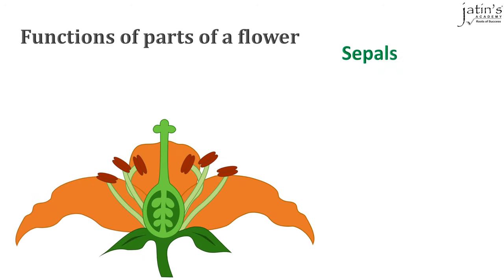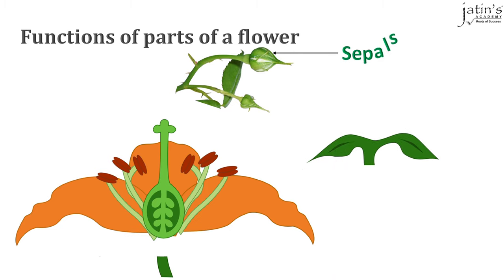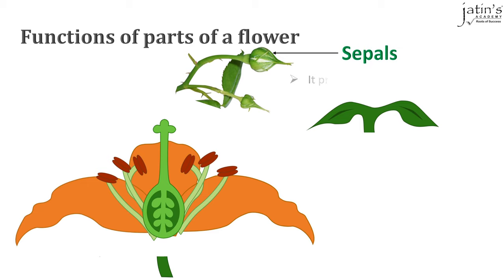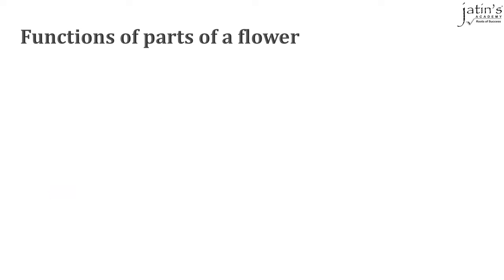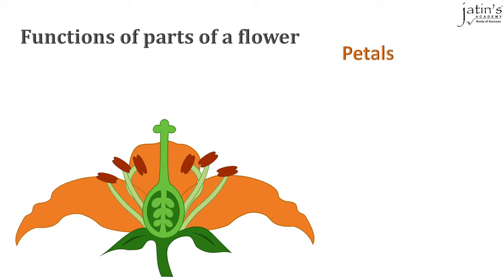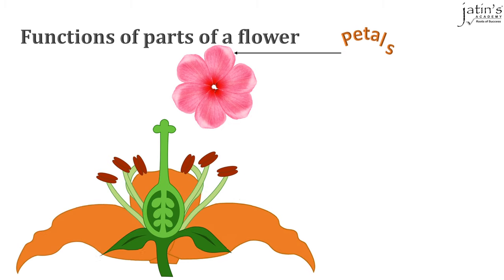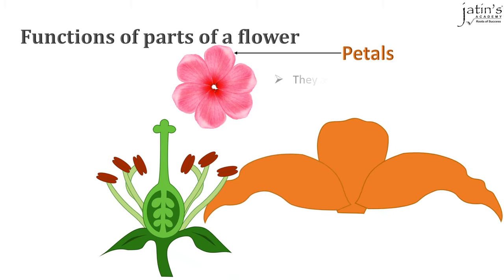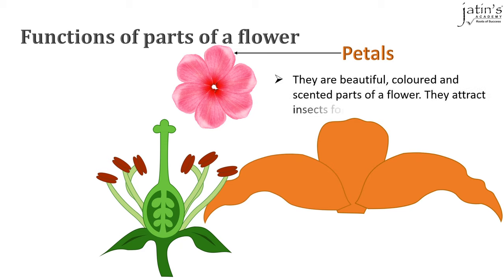Next come the sepals. Their main function is to protect the flower when it is in the bud stage. Next comes the second whorl of the flower — the petals. Petals are beautifully colored and scented parts of a flower, and their main function is to attract insects for pollination.